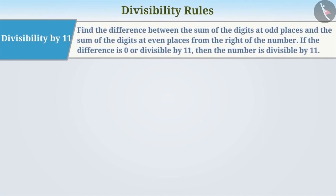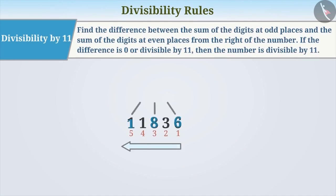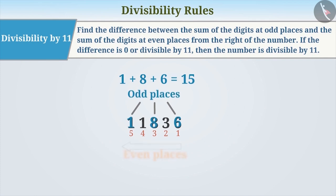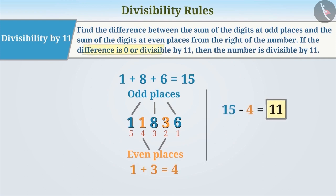Divisibility by 11: Find the difference between the sum of the digits at odd places and the sum of the digits at even places from the right of the number. If the difference is 0 or divisible by 11, then the number is divisible by 11.